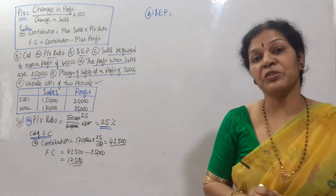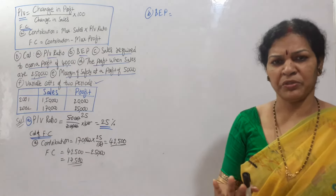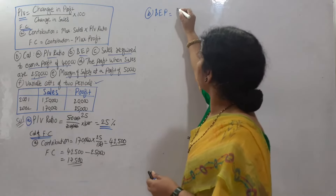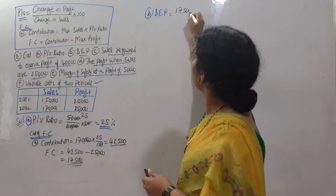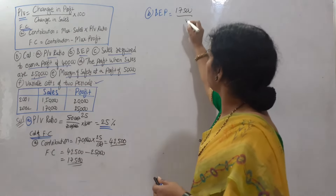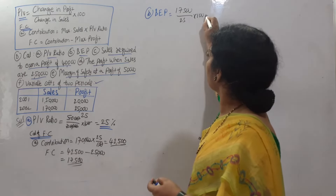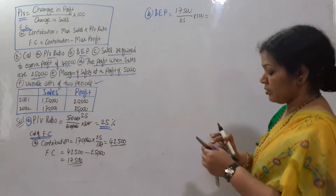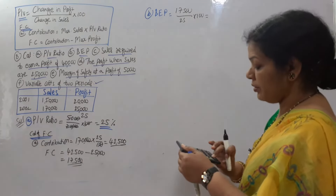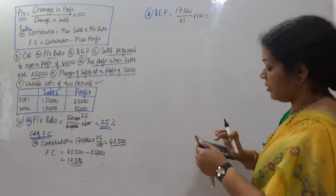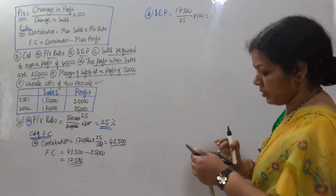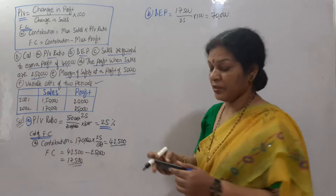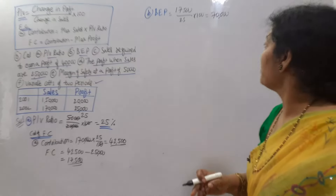Break-even point: the formula is fixed cost divided by PV ratio. Fixed cost is 17,500 divided by PV ratio of 25%, which means 17,500 into 100 divided by 25. BEP is 70,000.